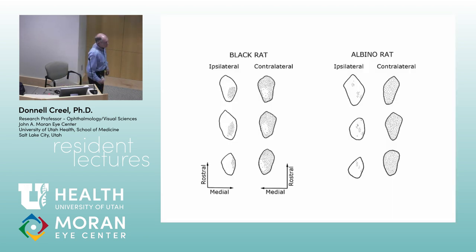In the rat geniculate, because they're about 90% crossed and 10% uncrossed, there are not these laminations or layers. There's a large mass of crossed fibers with a pocket of uncrossed. In the albino, whatever uncrossed fibers they have are fragmented into pieces, and there's no organized pocket on the other side.